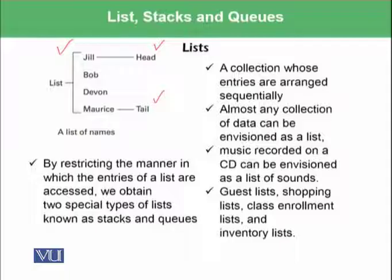We can traverse this list in different ways, and by restricting the manner in which the entries of a list are accessed, we obtain two special types of lists known as stacks and queues. So let's discuss them in detail.